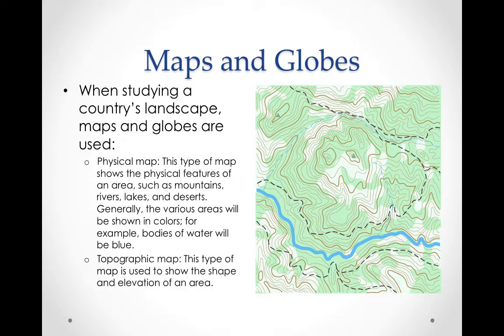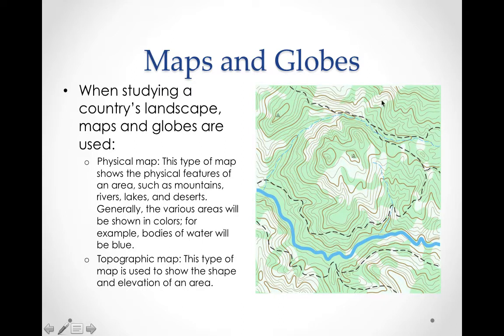And there are topographical maps. This type of map is used to show the shape and elevation of an area. For instance, this area here is a hilltop. The closer together you see these lines, the steeper it is. So what you have here is a hilltop next to a river.